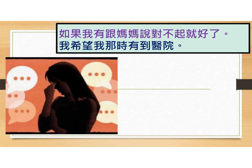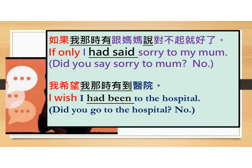如果我有跟妈妈说对不起就好了。我希望我那时候是有去到医院。So if you want to say that in English, how do you say so? 如果我那时候有跟妈妈说对不起就好了。 In English: if only I had said sorry to my mom.